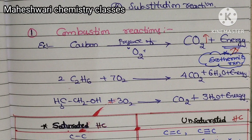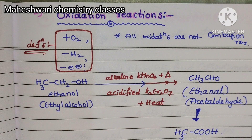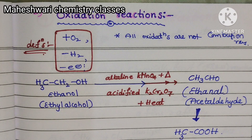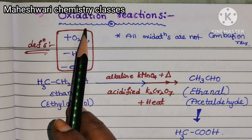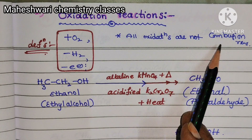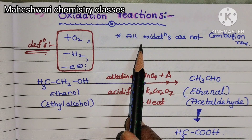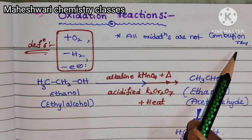This was about combustion reactions. Next, oxidation reactions. The definition of oxidation: adding oxygen, or removal of hydrogen, or removal of electrons, is called an oxidation reaction. Importantly, all oxidations are not combustion reactions — oxidation in every reaction is not a combustion reaction.